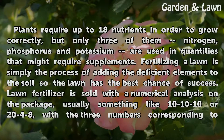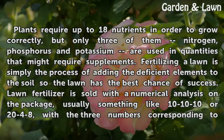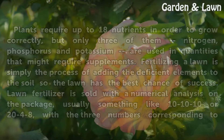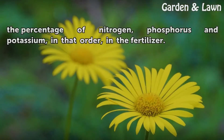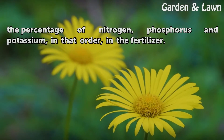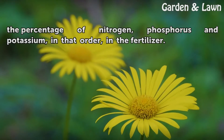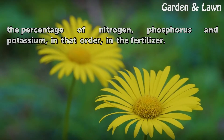Lawn fertilizer is sold with a numerical analysis on the package, usually something like 10-10-10 or 24-8, with the three numbers corresponding to the percentage of nitrogen, phosphorus, and potassium in that order in the fertilizer.